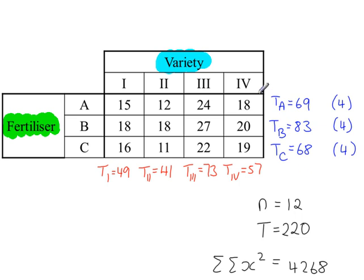There are 12 values in total in the table, so N is 12. If we add up all of the totals, so the totals for the varieties and the totals for the fertilisers, we get 220. If we square every single value in the table and then add them together, sigma sigma x squared is equal to 4268.